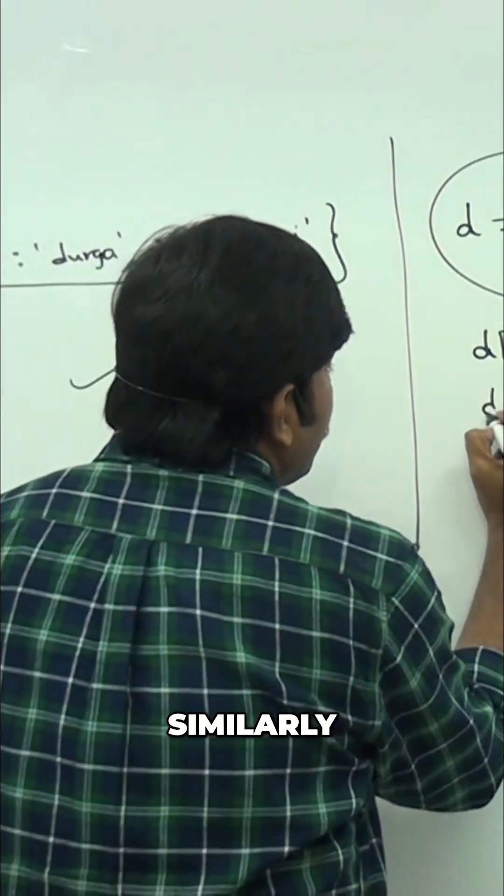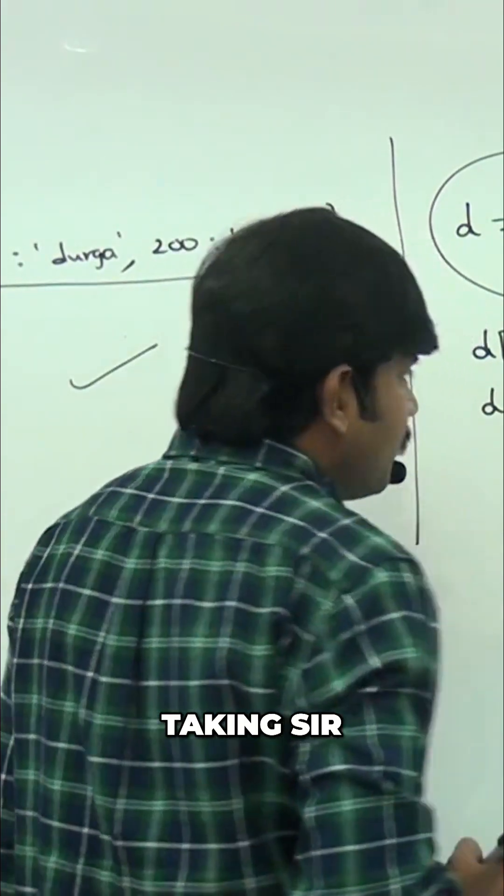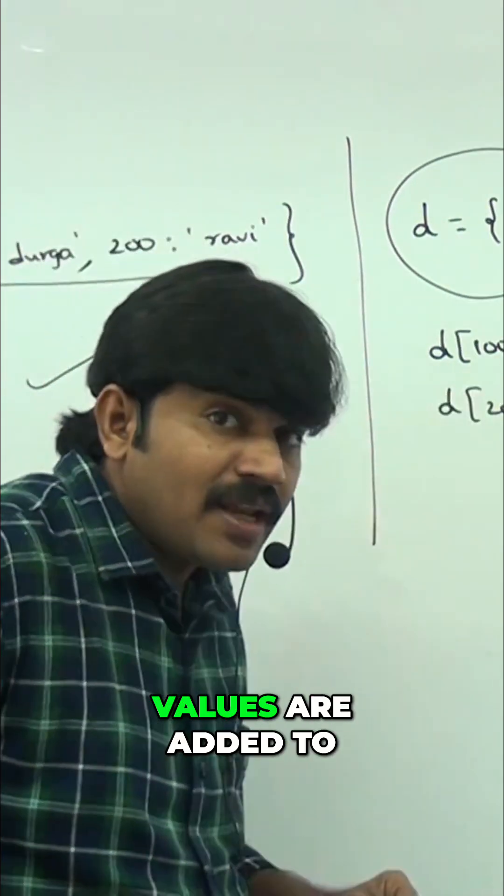Similarly, d of 200 ravi. Now how many key-values are added to the dictionary? Two key-values. But one important rule you should be aware: order, otherwise no guarantee in the dictionary.